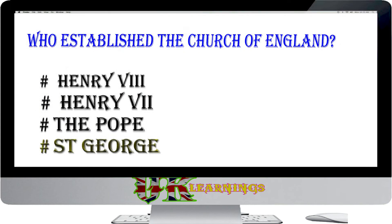When the Pope refused, who established the Church of England? Options: Henry VIII; the Pope; St. George. The answer is Henry VIII. To divorce his first wife, Henry VIII needed the approval of the Pope. When the Pope refused, Henry established the Church of England. In this new Church, the King, not the Pope, would have the power to appoint bishops and order how people should worship.